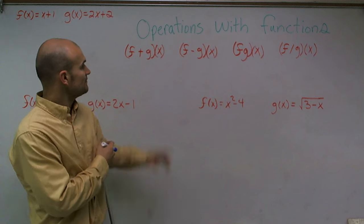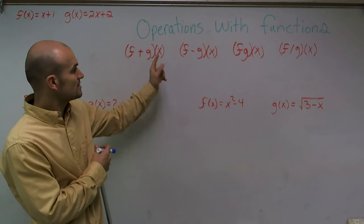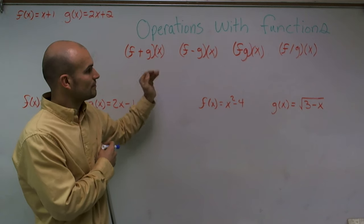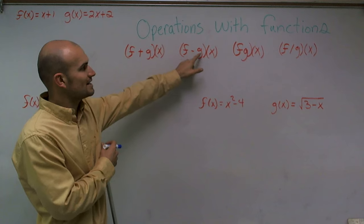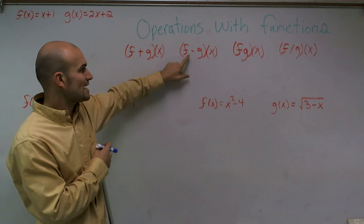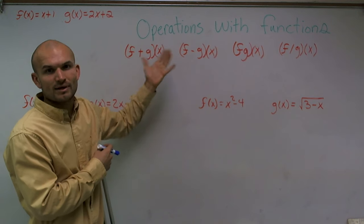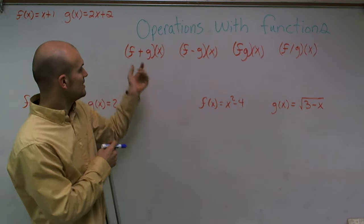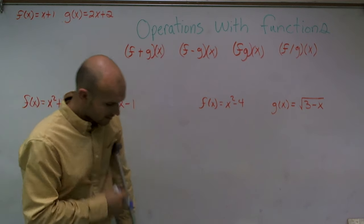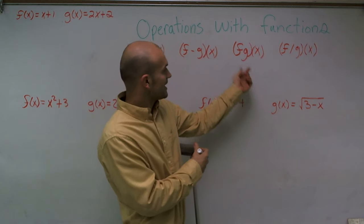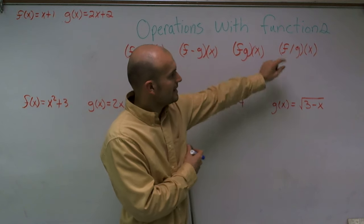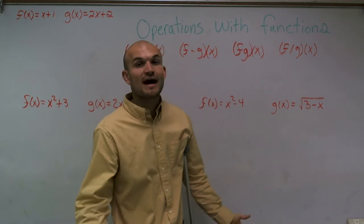The addition of a function is written as (f + g)(x). The subtraction is (f − g)(x) — you take the g of x function and subtract it from your f of x function. Addition means you take f of x and add it to g of x. Multiplication means you take f of x and multiply it by g of x. Division means you take f of x and divide it by g of x.